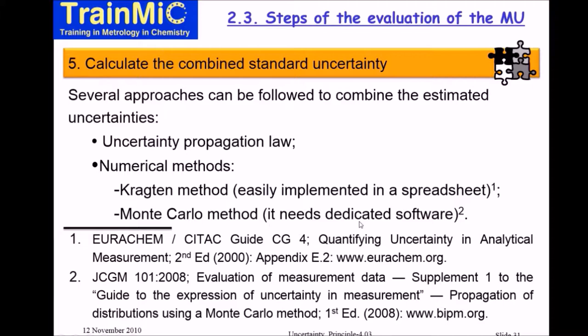If you take the Monte Carlo method, you can use dedicated software or even Excel, but you will need more computing resources — you need computers able to run many simulated values. The Eurachem/CITAC guide discusses all three approaches. The GUM only discusses the uncertainty propagation laws, and there is a supplement to the GUM that discusses Monte Carlo simulations.